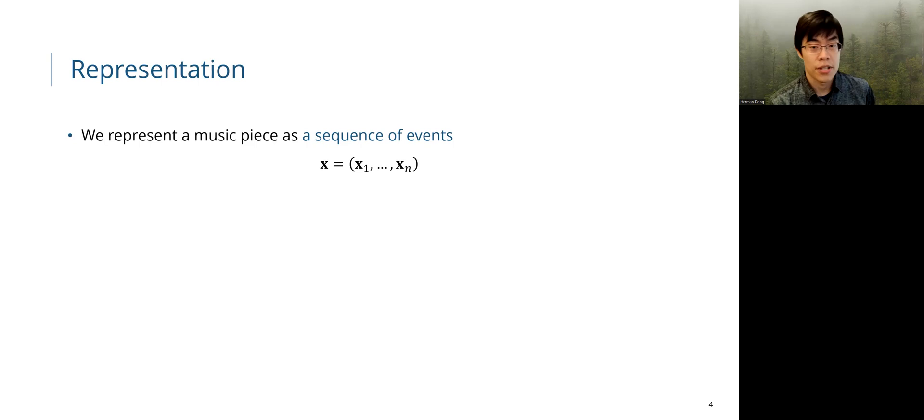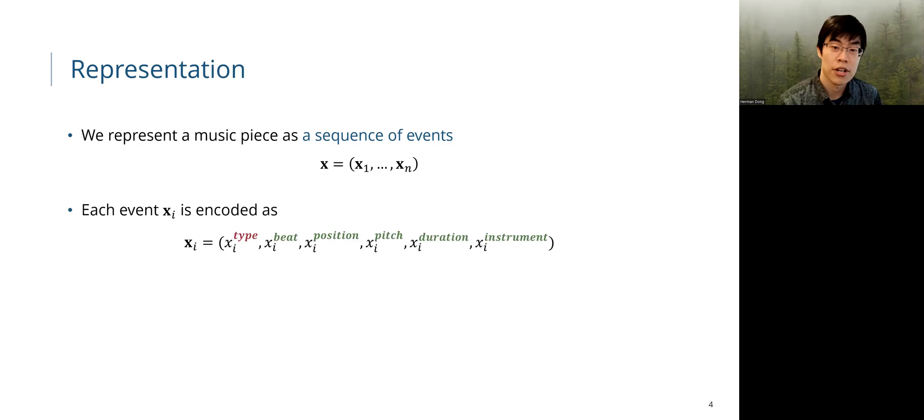Let's dig into our proposed system. In this work, we represent a music piece as a sequence of events, and each of these events is encoded as a tuple of six variables, which represents type, beat, position, pitch, duration, and instrument.